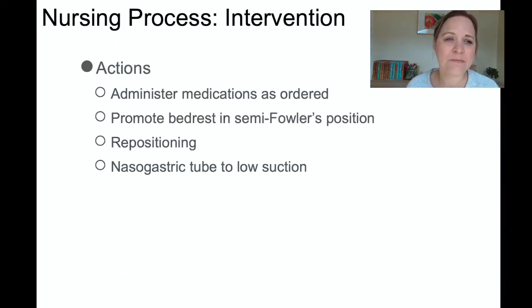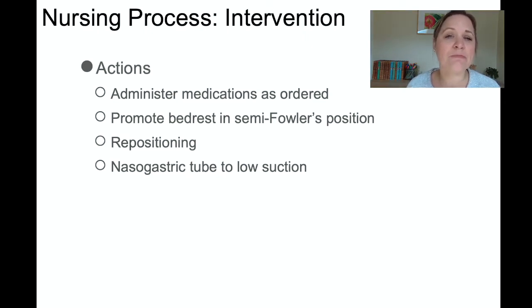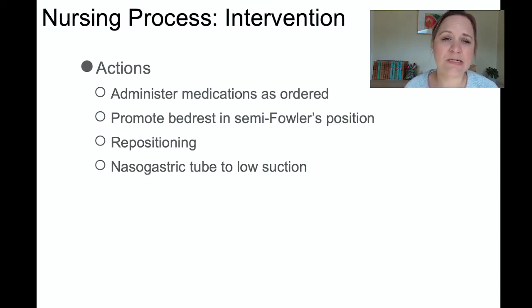Actions to take may include administering medications as ordered, promoting bed rest in a semi-Fowler's position — that's often the position of comfort for these patients — and repositioning with pillows to get them as comfortable as possible until surgery. Patients may also have an order for a nasogastric tube placed to low suction to help with the abdominal distension.